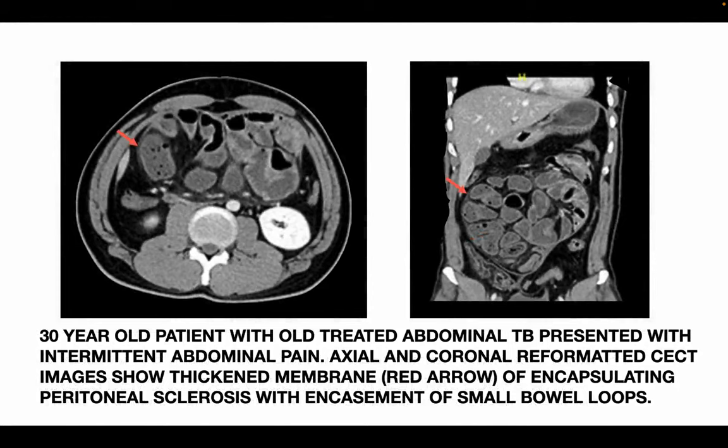This is another case of a 30-year-old patient with old treated abdominal TB who presented with intermittent abdominal pain. Axial and coronal reformatted images show a thickened membrane (red arrow) of encapsulating peritoneal sclerosis with encasement of the small bowel loops.